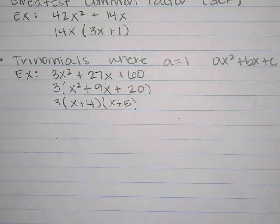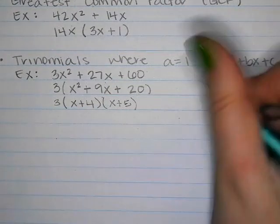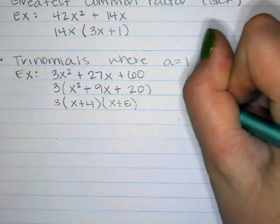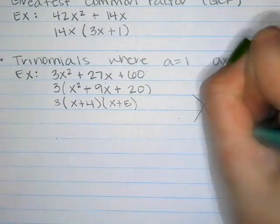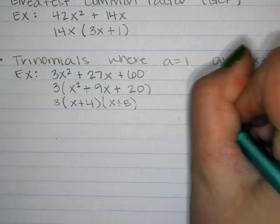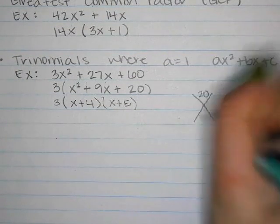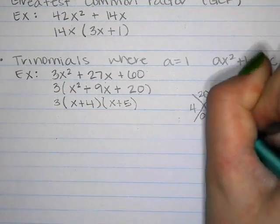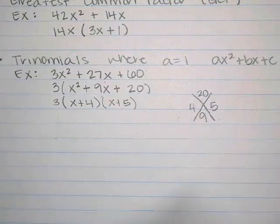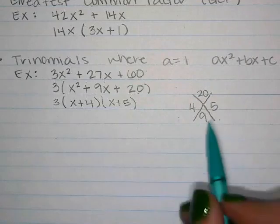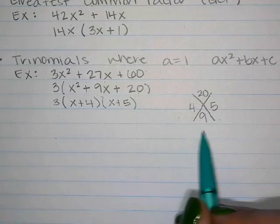So the answer is 3(x + 4)(x + 5). Some people show their work by writing what multiplies to 20 but adds to 9, and circling 4 and 5. I usually show my work that way — it's optional, but that's what you'll see in my answer keys.